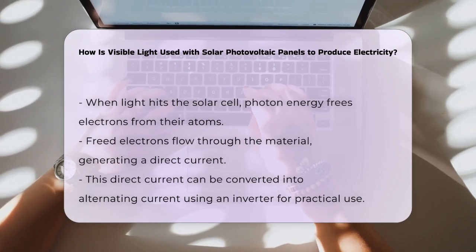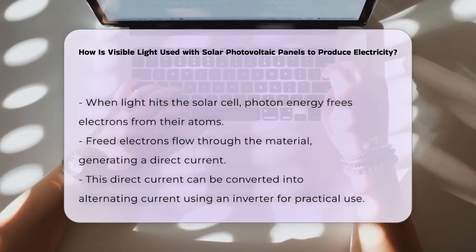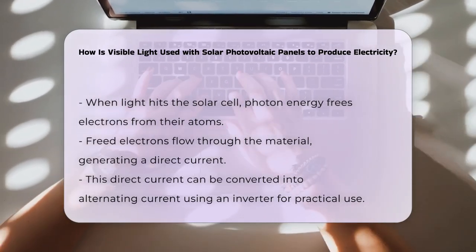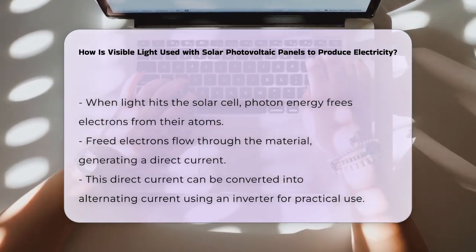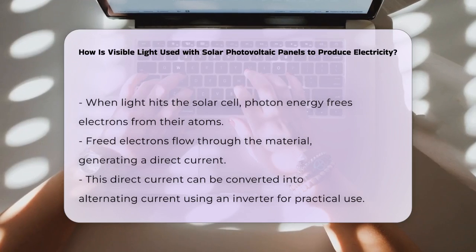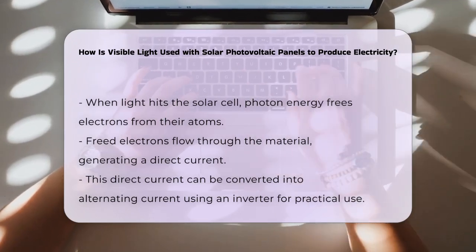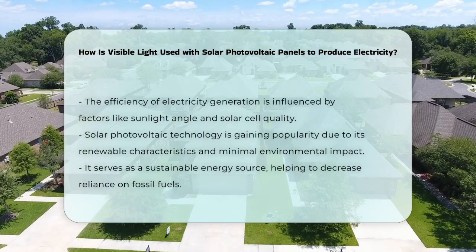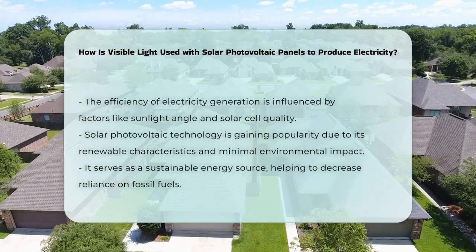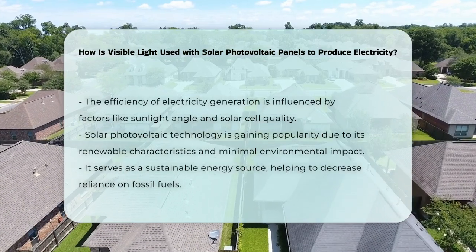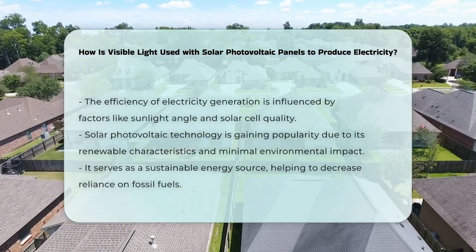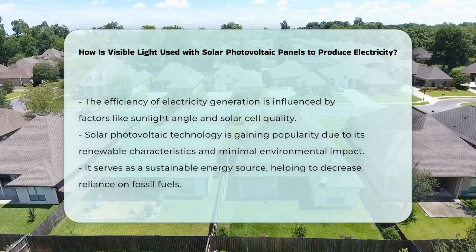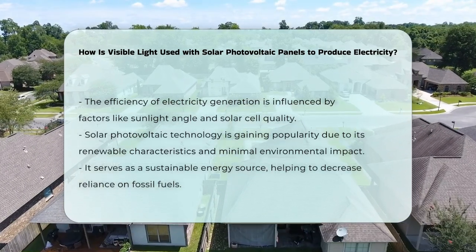As the electrons flow, they create a direct current, which can be harnessed for power. This direct current can be converted into alternating current using an inverter, making it suitable for household or commercial use. The efficiency of this process depends on factors such as the angle of sunlight and the quality of the solar cells. Solar photovoltaic technology has become increasingly popular due to its renewable nature and low environmental impact, providing a sustainable energy source and reducing reliance on fossil fuels.